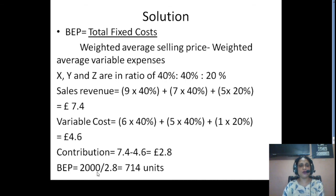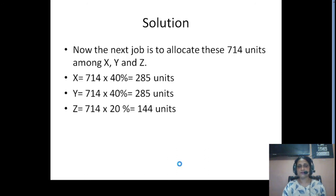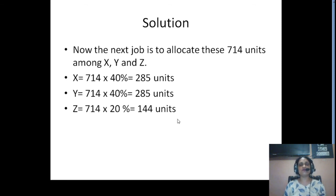The weighted average contribution = £7.40 − £4.60 = £2.80. Since fixed costs of £2,000 are not attributable to individual products, we take them altogether. Breakeven point = £2,000 ÷ £2.80 = 714 units in total. This 714 units is then divided among X, Y, and Z in the same proportion: X = 714 × 40% = 285 units, Y = 285 units, Z = 714 × 20% = 144 units. So if you produce with this composition, you will break even at 714 units.